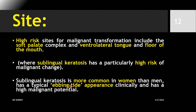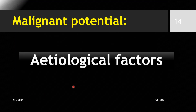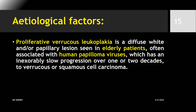Sublingual keratosis is more common in females. Clinically, you can see leukoplakia on the floor of the mouth or sublingual side, where molars, teeth, and amalgam restorations are also visible alongside the sublingual white patch. Regarding etiology, tobacco use is a key factor. Proliferative verrucous leukoplakia is a diffuse white and papillary lesion seen in adult patients.